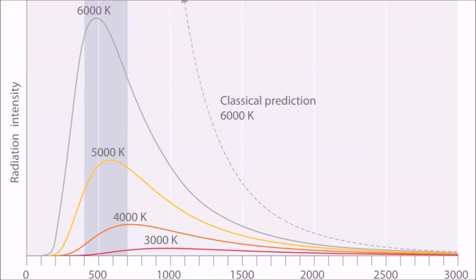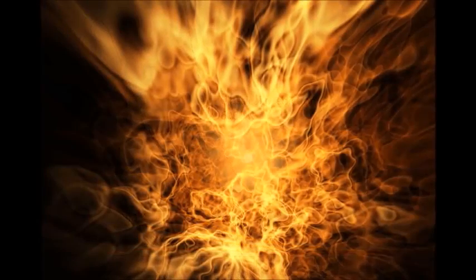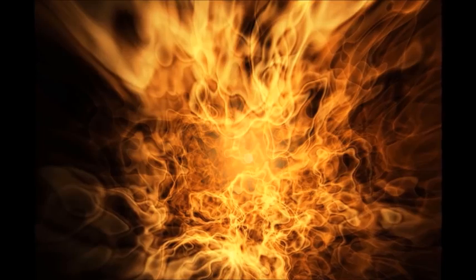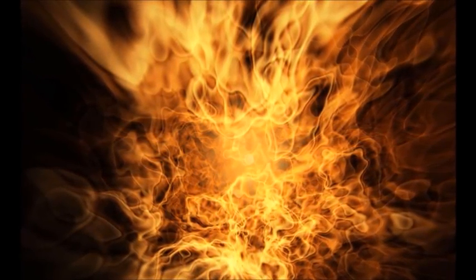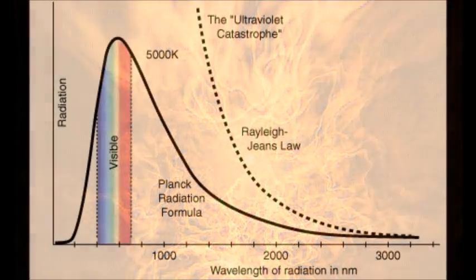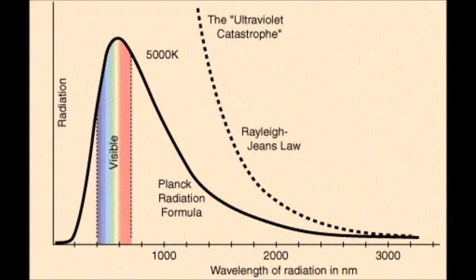But there was a problem. The classical theory predicted that as higher frequencies of the emitted electromagnetic waves are considered, their intensities approach infinity, and the universe should be burning in an inconceivable blaze of blackbody radiation. This evidently wasn't happening, so obviously there was a problem. A problem that came to be known as the ultraviolet catastrophe.